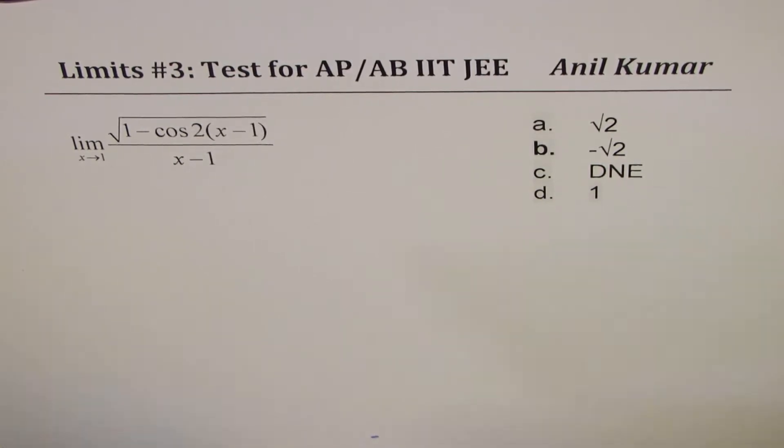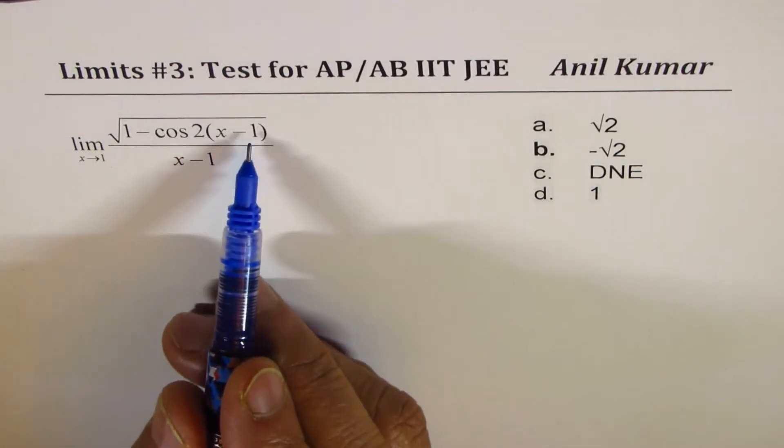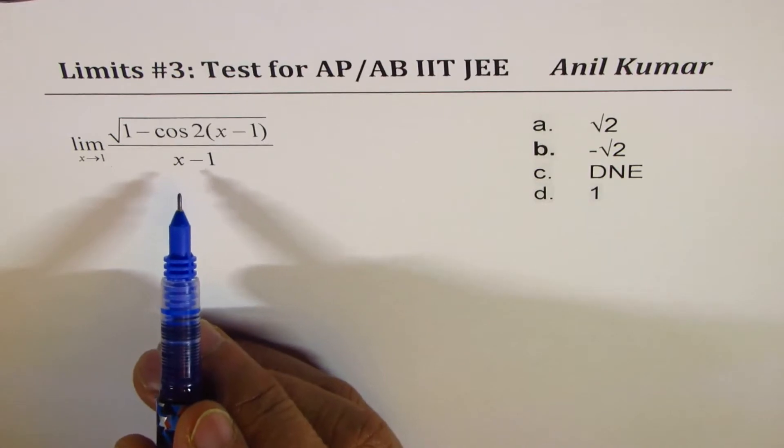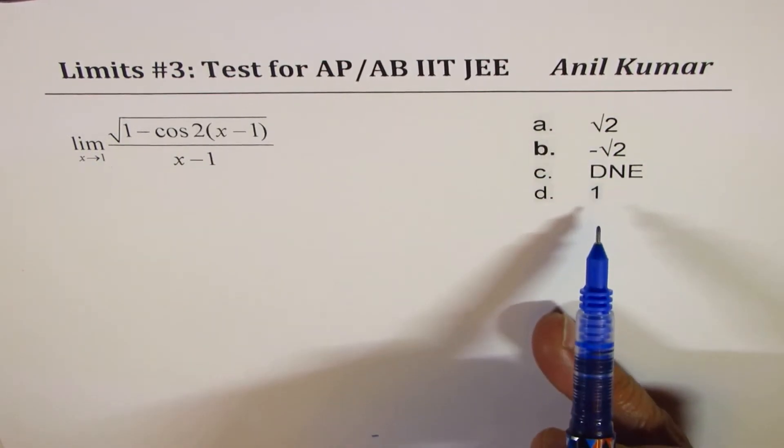We need to find limit when x approaches 1 for square root of 1 minus cos 2(x-1) divided by x minus 1. So here we are given four choices.